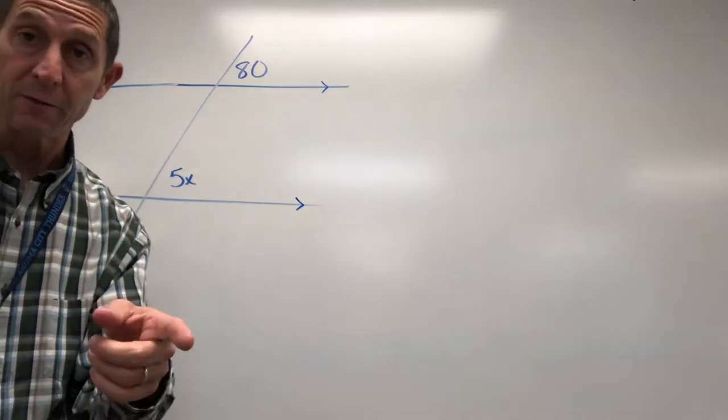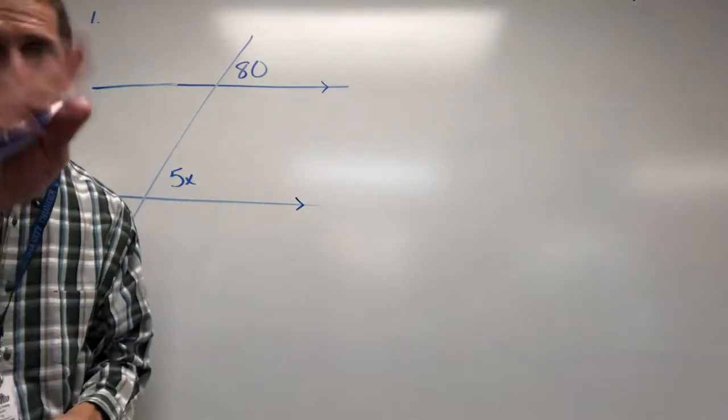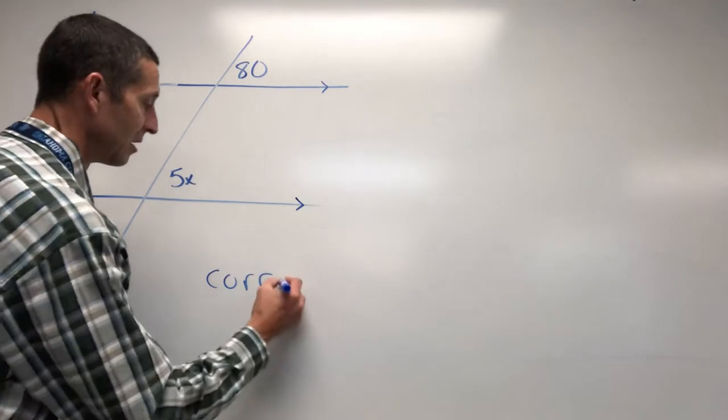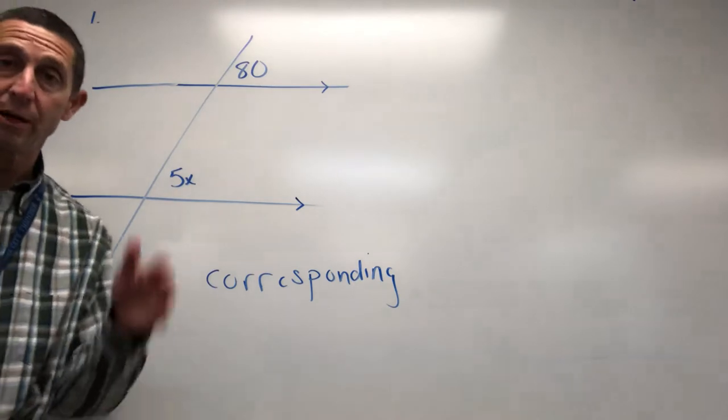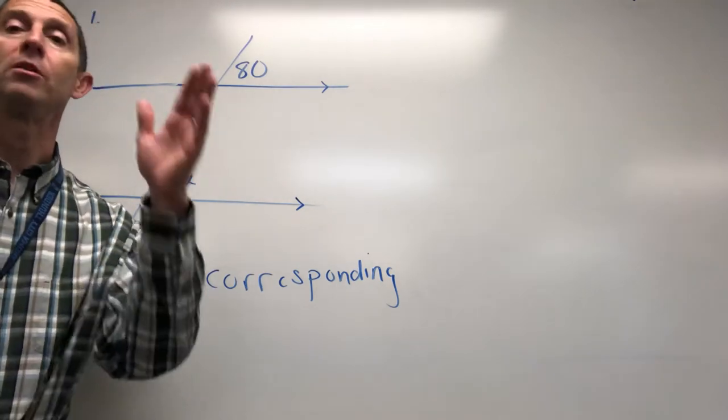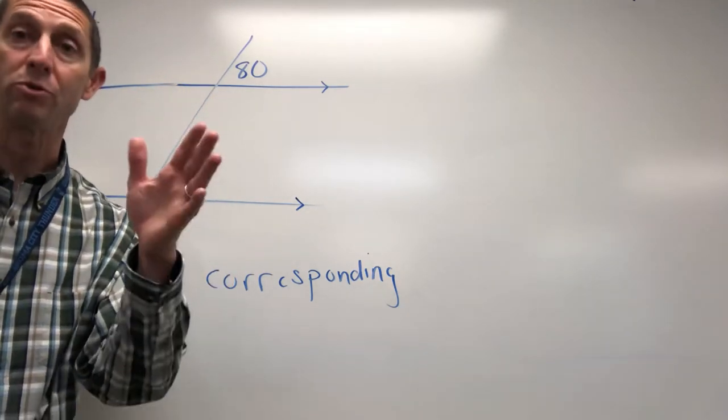Alright, first off, identify your angles. Are they corresponding? Are they alternating? Are they interior? Are they exterior? So I've got the 80, I got the 5x. These are corresponding angles and anytime that you have corresponding angles you can always set those equal to each other.